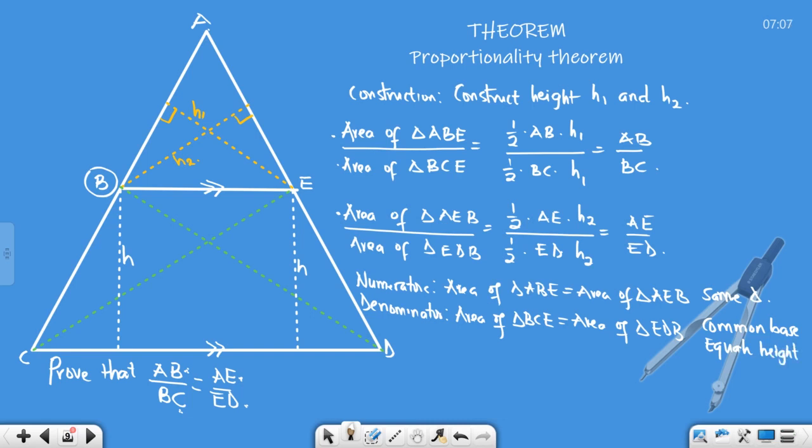Now that the areas of the numerators are the same and areas of denominators are the same, we can equate those two. Therefore, area of triangle ABE over area of triangle BCE should therefore equal area of triangle AEB over area of triangle EDB, because the ratios are the same. We got this answer here as AB over BC and we got this answer as AE over ED. We're done. That is six marks for you.